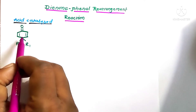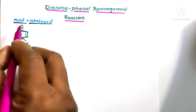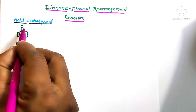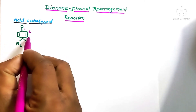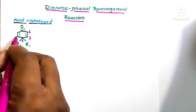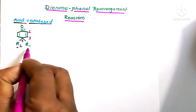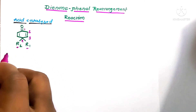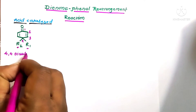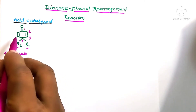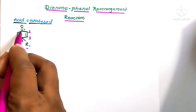Here are the main functional groups of this substrate. We start numbering from the ketone functional group, so this carbon atom is C1, and the others are C2 through C6. At C4, there are two substituents, R1 and R2, making this the 4,4-disubstituted cyclohexadienone.